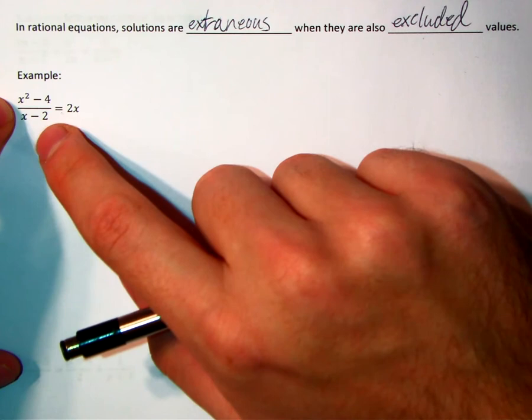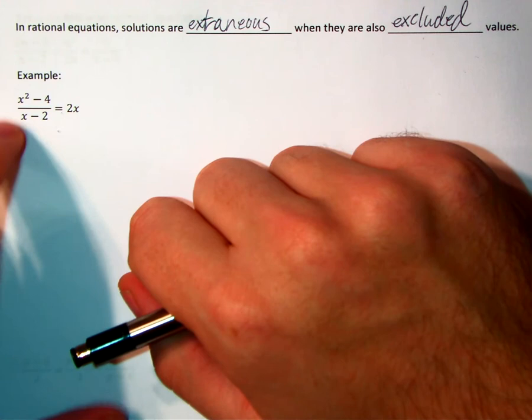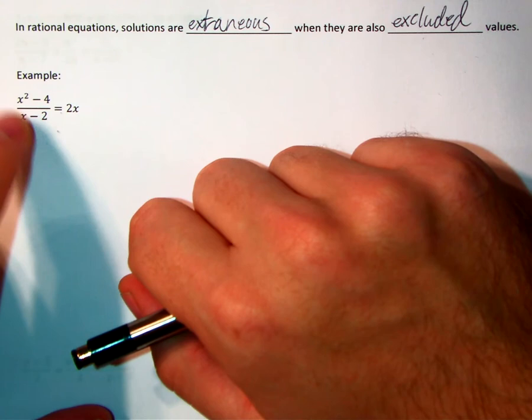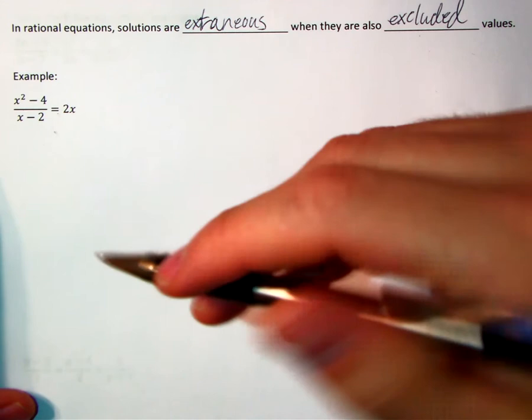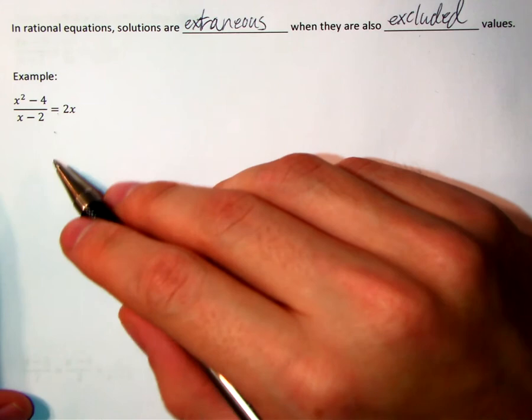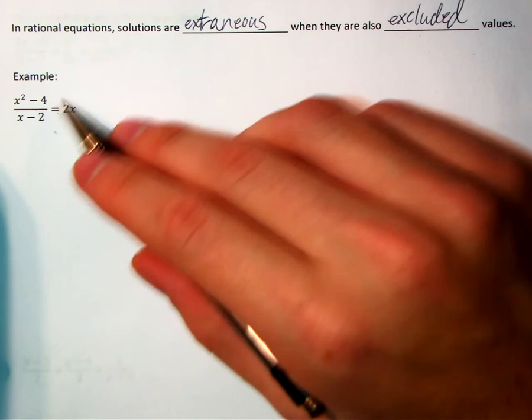We've only got one fraction here. You can see x minus 2 in the denominator — when would that become zero? When x is 2. So x equals 2 would be an excluded value. If I solve all this and one of my answers is x equals 2, then I have to say that's an extraneous solution, because it doesn't satisfy the original equation. If I put x equals 2 in here, it would make me divide by zero, which is not allowed. That's an excluded value.